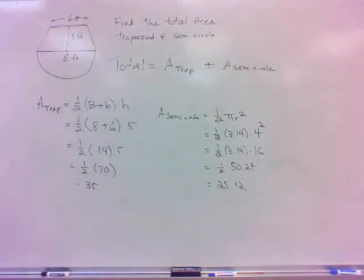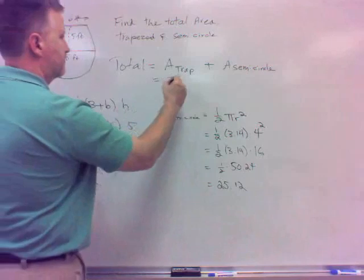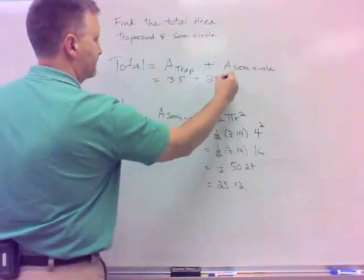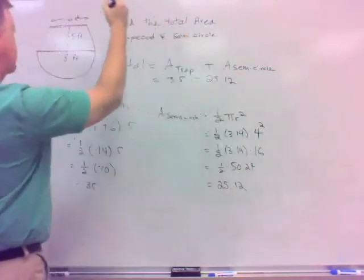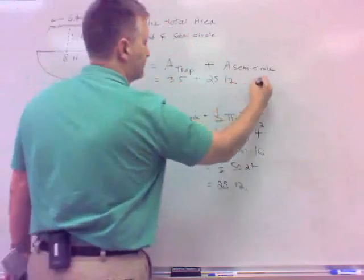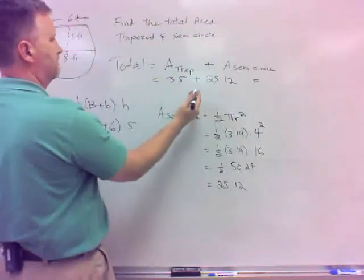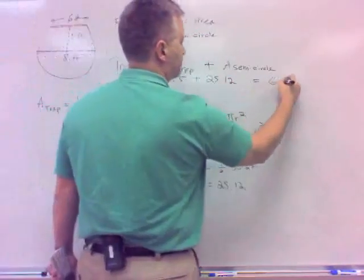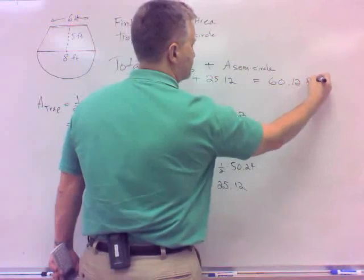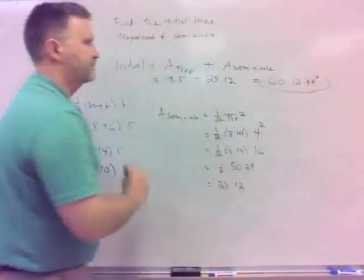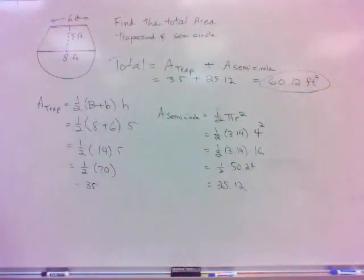So my total area would be 35 plus 25.12, which is 60.12 feet, square, square units, always for area. Did I do that right? I was going through.